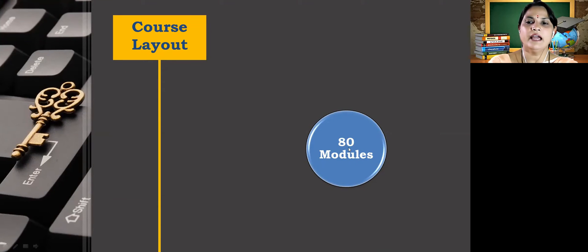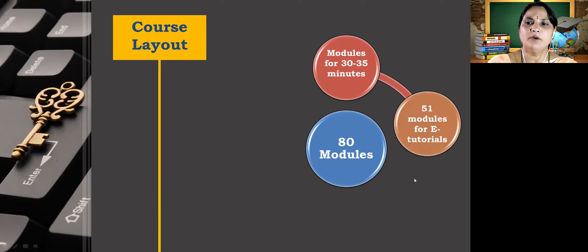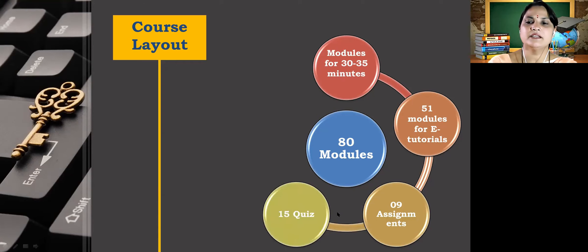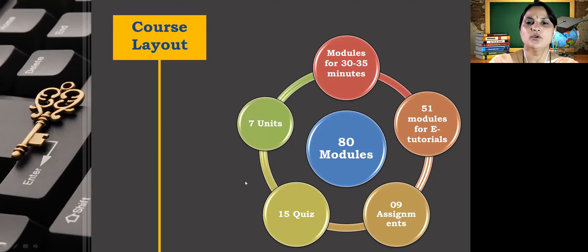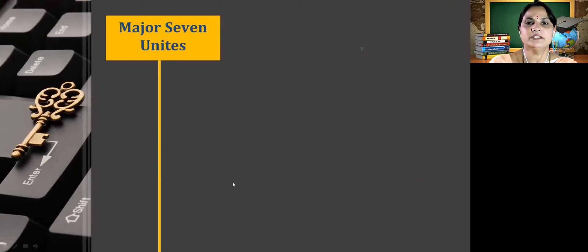Let us see the course layout of this online course. This course will have 80 modules, each of 30 to 35 minutes. Out of 80 modules, 51 modules are e-tutorials based on lesson plans. Students must submit a total of 9 assignments after completion of each week's modules. There will be 15 quizzes to solve, and this course consists of 7 units.